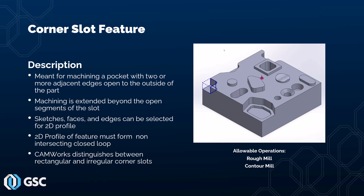Next is the corner slot feature. A corner slot feature is similar to a slot feature, except you have two or more edges that are open to the outside of the part — whereas the regular slot feature has only one open edge. Machining is extended beyond the open segments of the slot. Sketches, faces, and edges can be selected for the 2D profile, which must form a non-intersecting closed loop. CAMWorks distinguishes between rectangular and irregular corner slots. The allowable operations are rough mill and contour mill.